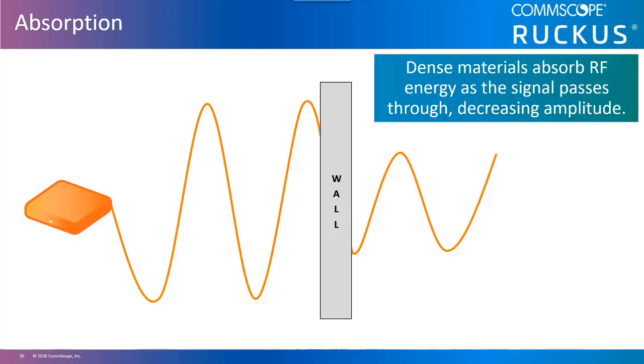More dense materials absorb more of the RF energy, allowing a much weaker signal to pass through the object, if any at all.